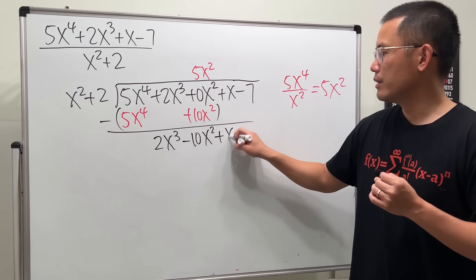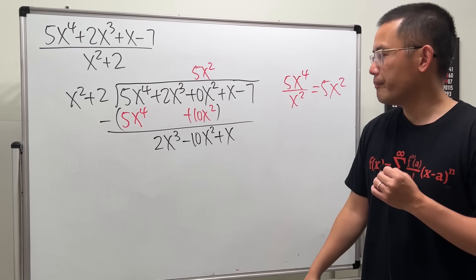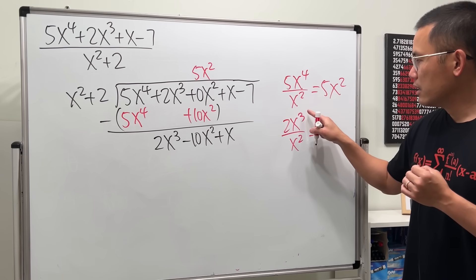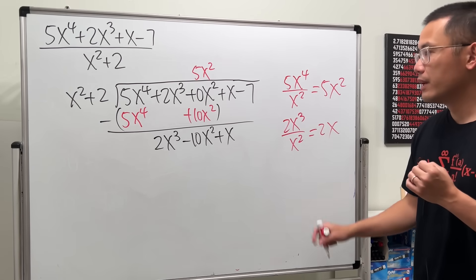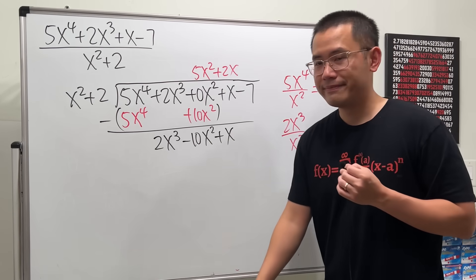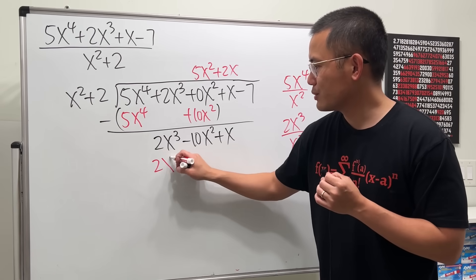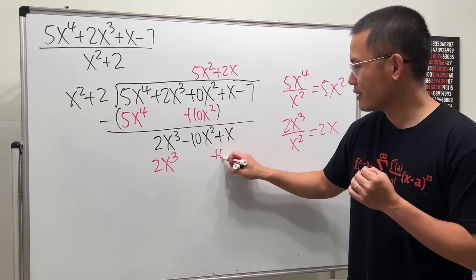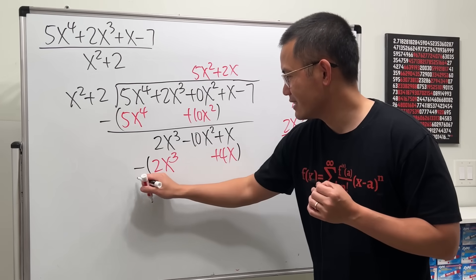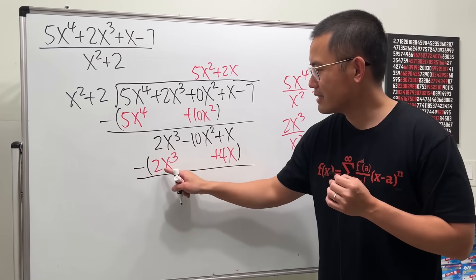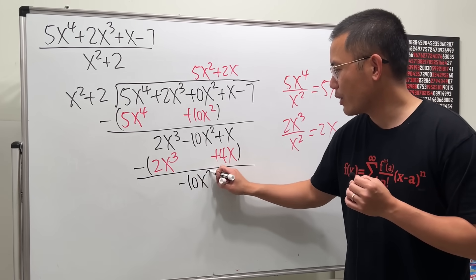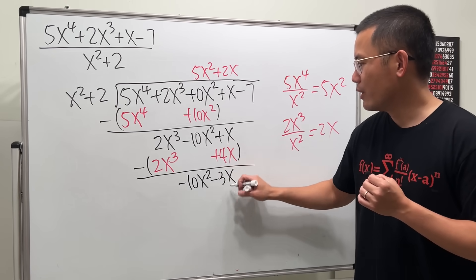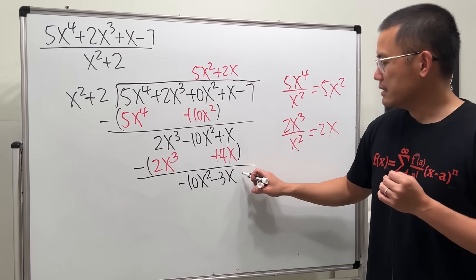Bring down the x term. Now compare: 2x³ divided by x² is 2x, so write plus 2x. 2x times x² is 2x³, and 2x times 2 is 4x. Subtract: 2x³ cancels. Bring down negative 10x². Then x minus 4x is negative 3x, keeping the x term. Bring down minus 7.